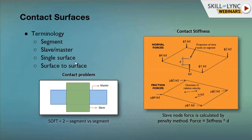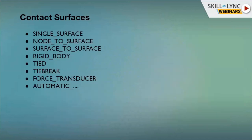In single surface contact, no master surface needs to be defined; in surface-to-surface contact, you define both slave nodes and master surface. There are different types of contacts: single surface is the most widely used contact option in LS-DYNA especially for crash — the slave surface is defined with a set and no master surface is defined, and contact is considered between all parts in the slave list including self-contact. In nodes-to-surface contact, slave nodes search for the master surface.